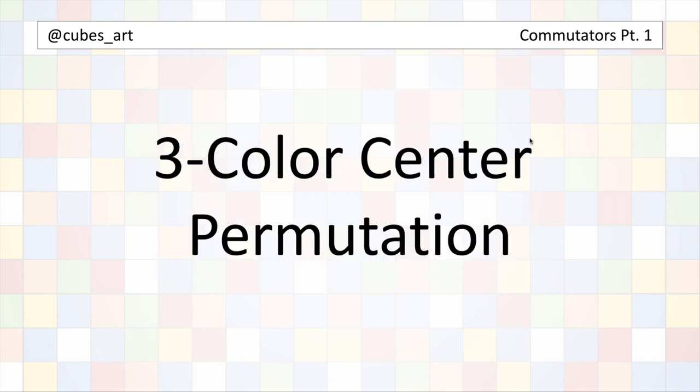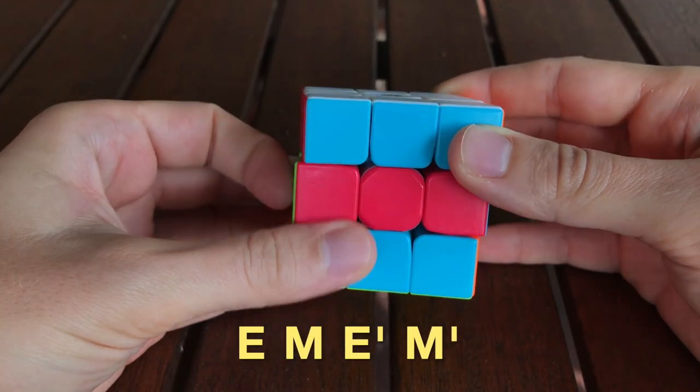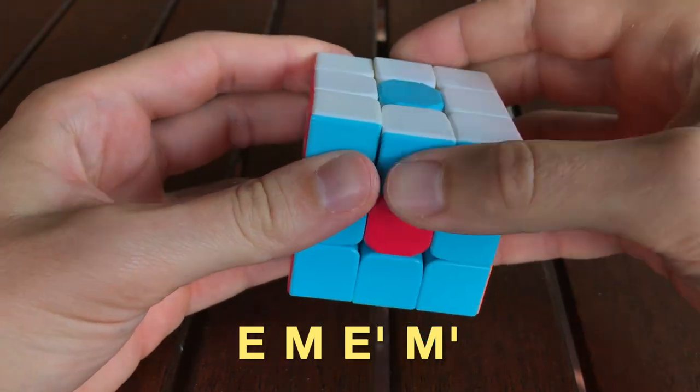The first algorithm I'll talk about is the three-color center permutation, or the DOTS algorithm for short. The DOTS algorithm is E, M, E', M'.